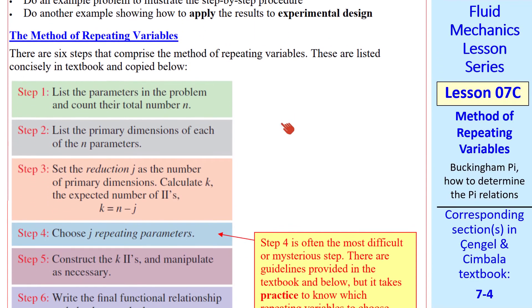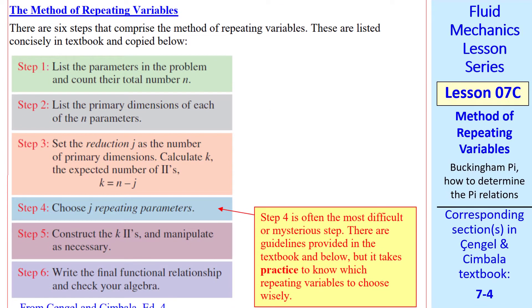The method of repeating variables is basically a cookbook recipe with six steps. I'll go over these briefly, and then we'll do an example to illustrate the procedure. First we list the parameters and count their total number, n. Parameter generally means a variable, like a speed or a length. We list the primary dimensions of each of these parameters, and then we set the reduction, j, as the number of primary dimensions. Once we know n and j, we calculate k, which is the expected number of pis: k equals n minus j. This is called the Buckingham Pi Theorem.